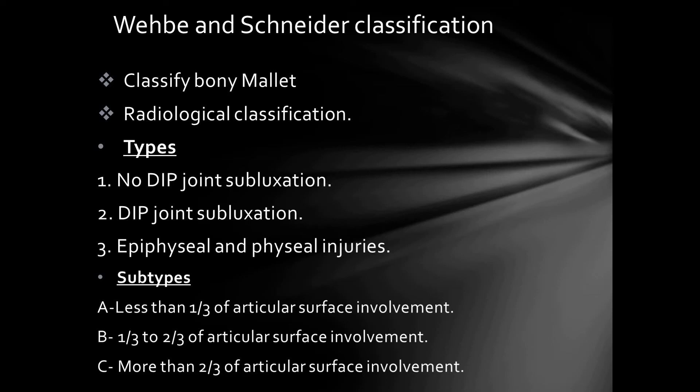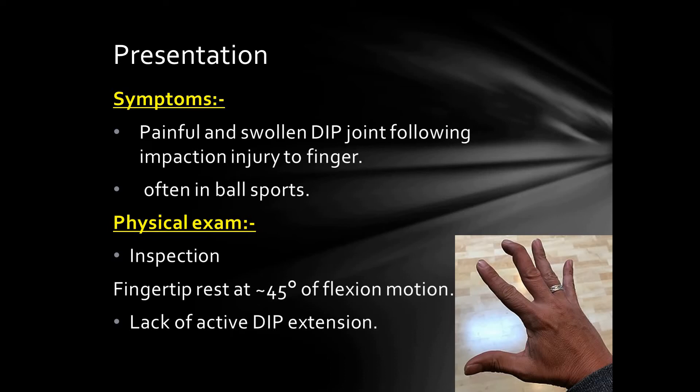Wehbe and Schneider classification is based on radiological findings and classifies bony mallet finger. It has three types, each with three subtypes. Type 1 has no subluxation of the distal interphalangeal joint; Type 2 has subluxation; Type 3 is epiphyseal and physeal injury in pediatrics. Subtypes A, B, and C indicate less than one-third, one-third to two-thirds, and more than two-thirds of articular surface involvement, respectively.